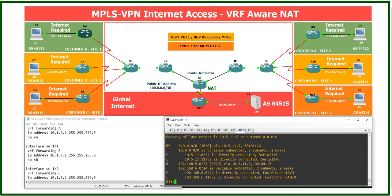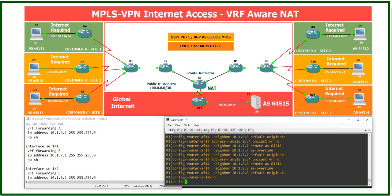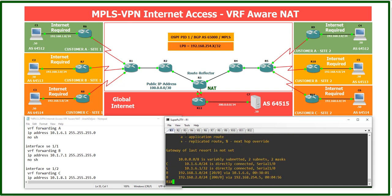We didn't configure NAT on CE routers, but we need a default route so they can forward internet-bound traffic. The next thing we need is a path in the routing table of VRF A, VRF B, or VRF C to send received internet-destined traffic toward Router 3. When R1 receives traffic from VRF A, it compares it with the VRF A routing table — running 'show ip route vrf a' shows only private IP addresses, with no route to the internet.